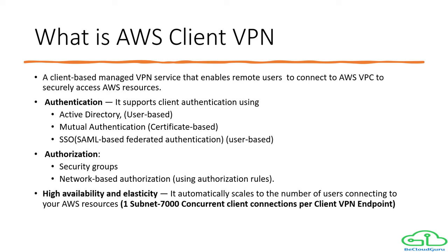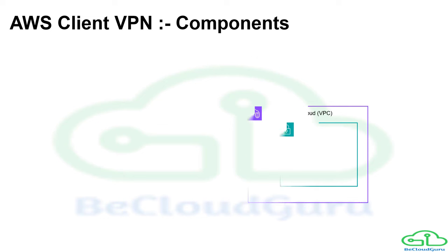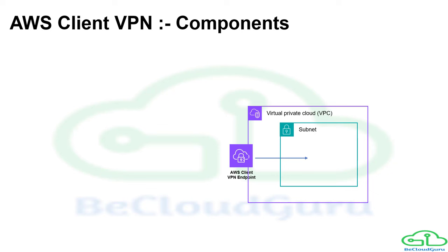Now let's look at the components that make AWS Client VPN work. The first is your networking part — your Virtual Private Cloud, which is the target network, containing multiple subnets. Then we have the AWS Client VPN endpoint, which is the resource you create and configure to enable the Client VPN sessions. It acts as the termination point for all your VPN connections.